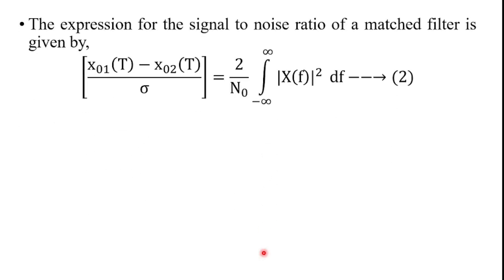The expression for signal-to-noise ratio of the matched filter is given by: [x01(t) − x02(t)] / σ = (2/N0) ∫_{−∞}^{∞} |X(f)|² df, where N0 is the power spectral density of the noise and X(f) is the frequency response of the filter.